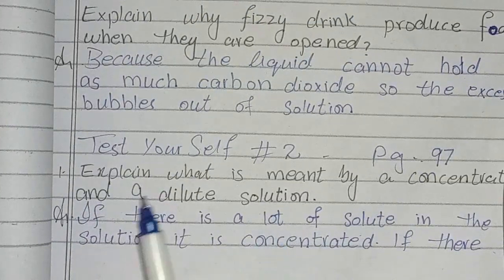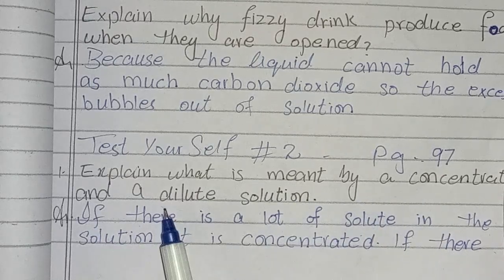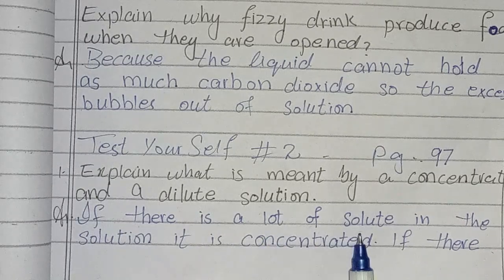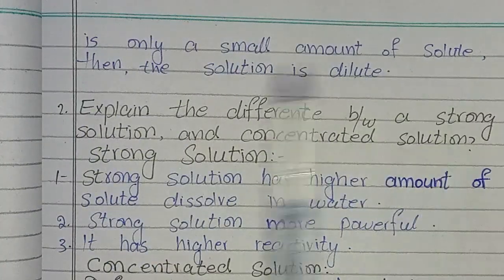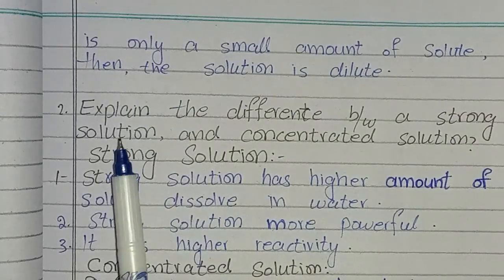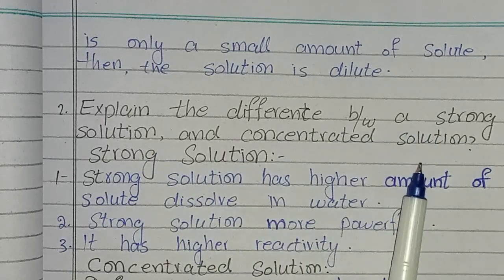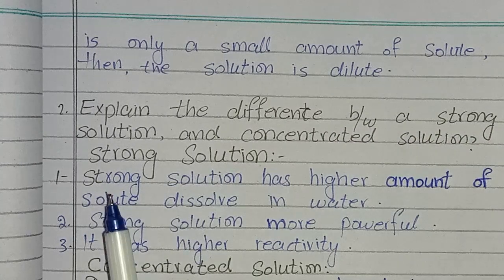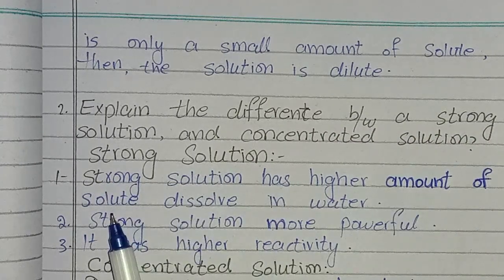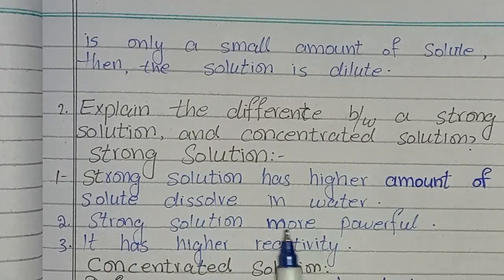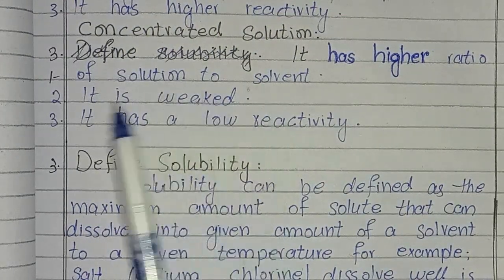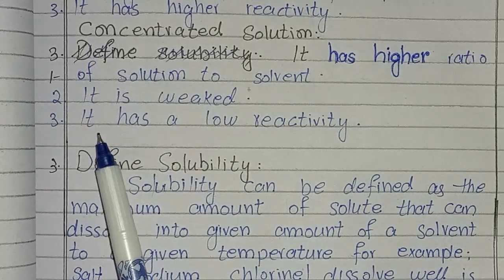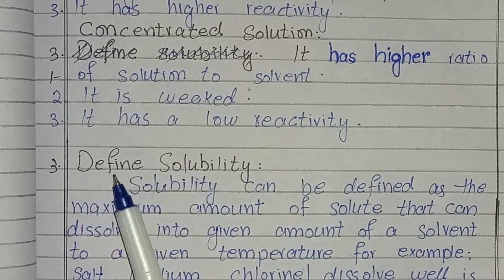Second Test Yourself is on page number 97. First question: explain what is meant by a concentrated and a dilute solution. If there is a lot of solute in the solution, it is concentrated. If there is only a small amount of solute, then the solution is dilute. Next question: explain the difference between a strong solution and a concentrated solution. A strong solution has a higher amount of solute dissolved in water and higher reactivity.